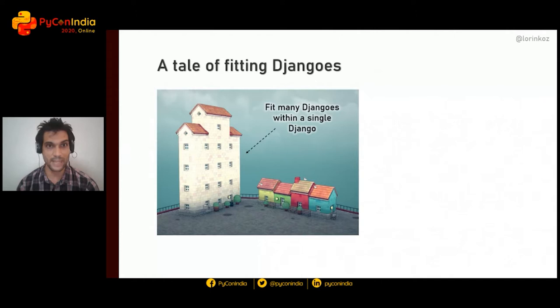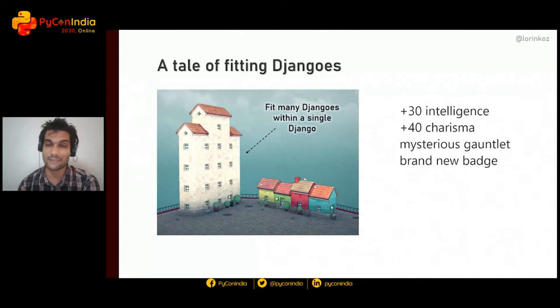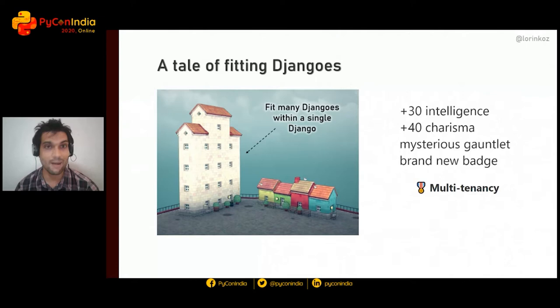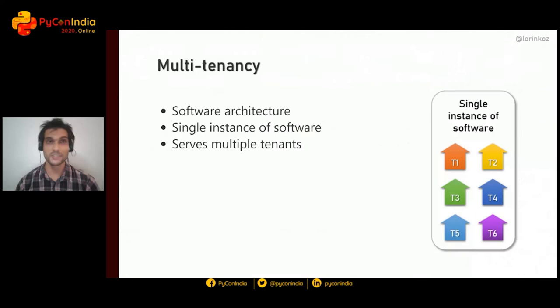There's a better way: fitting many djangos within a single Django. You're growing vertically, the sky is your limit, and you gain intelligence, charisma, a mysterious gauntlet, and a brand new badge — which is multi-tenancy. The art of fitting many things into something else is what is typically called multi-tenancy in housing, software development, and yes, Dungeons and Dragons too.